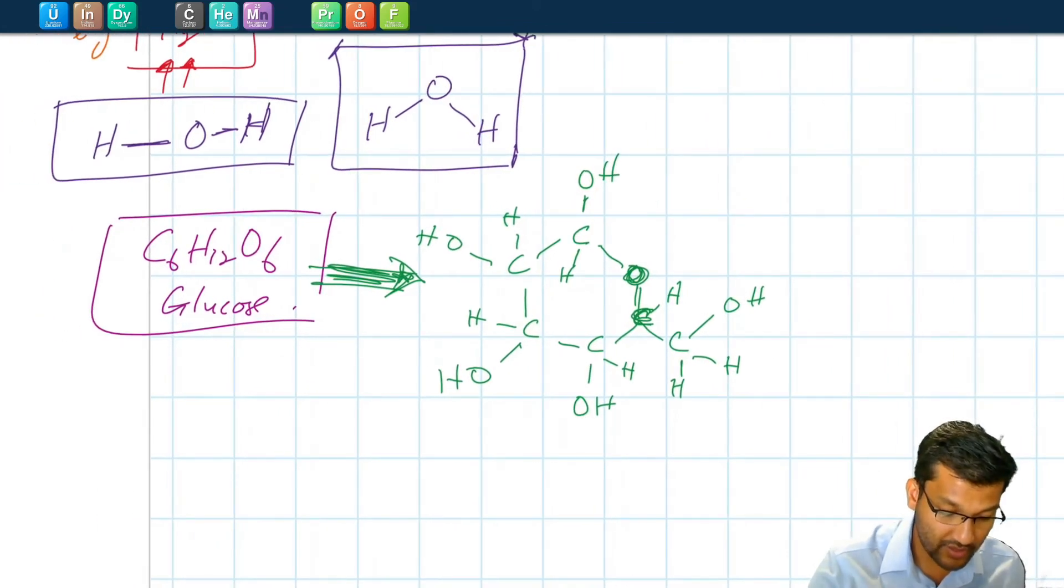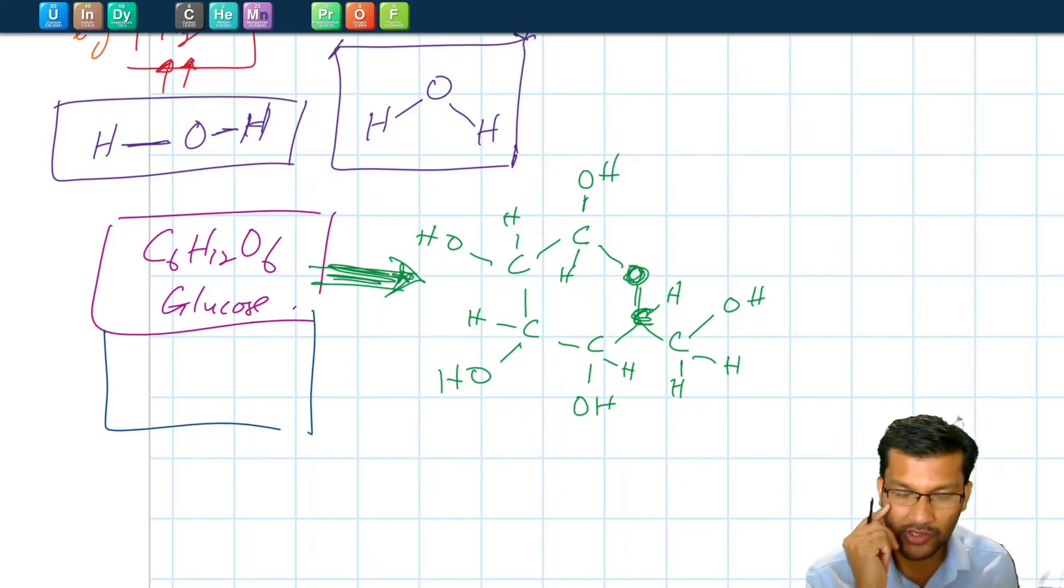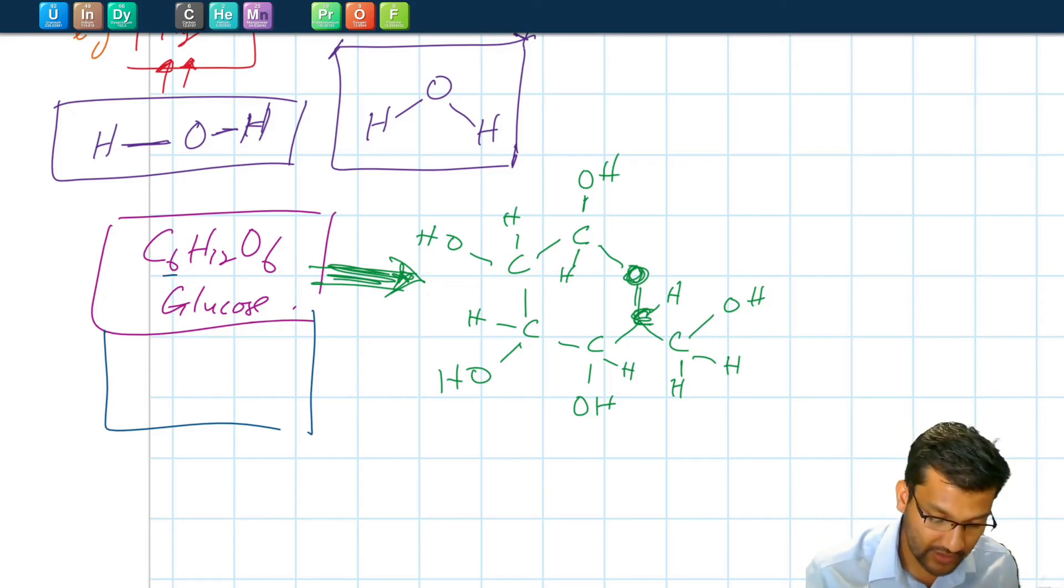However the empirical formula gives us less information. So the empirical formula for glucose, pause here and try to see if you can figure that out. Okay, the empirical formula, we look at the lowest whole number ratio for all of these: 6, 12 and 6 is going to be C1H2O1, and we can just ignore the ones. So this is the empirical formula.